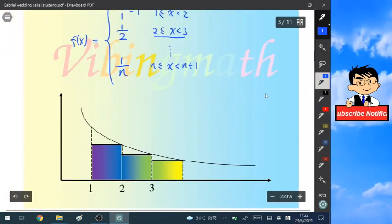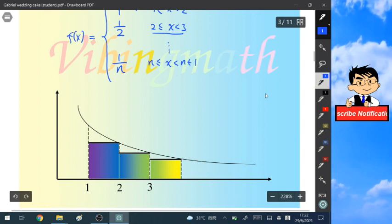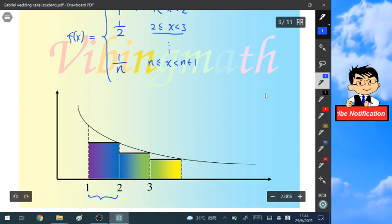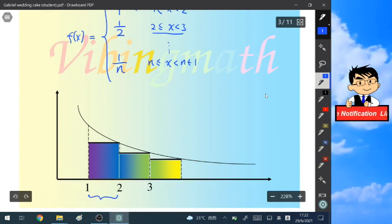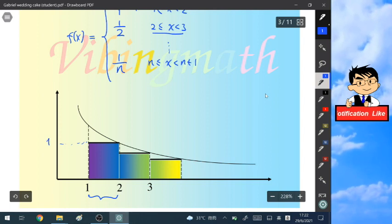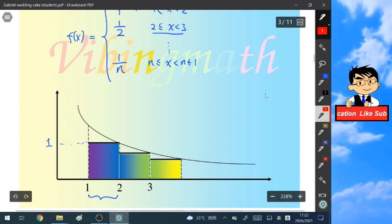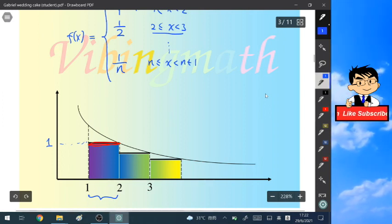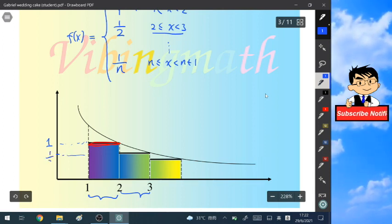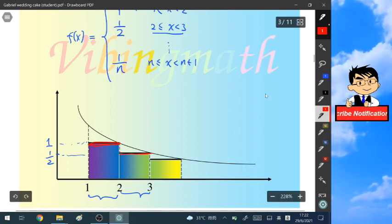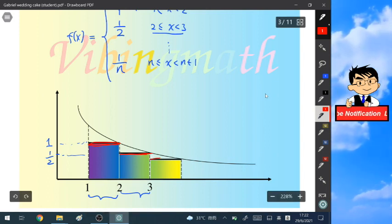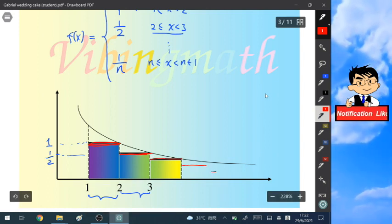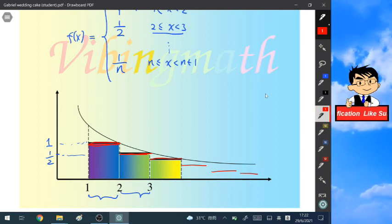So graphically, we can say for the interval 1 and 2, we will take the value of the function 1, and we will have a horizontal line here. And then for 2 and 3, we will take 1 over 2, which is not in scale, sorry. And we will have another horizontal line. And we will have infinitely many horizontal lines with decreasing height.